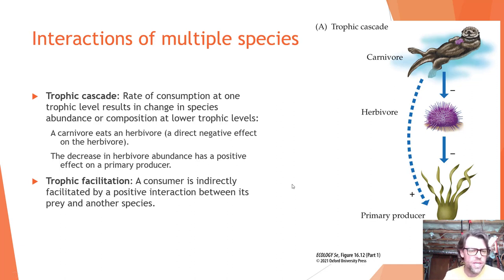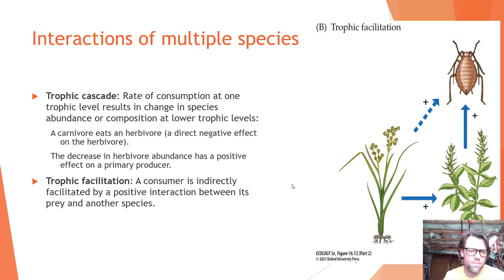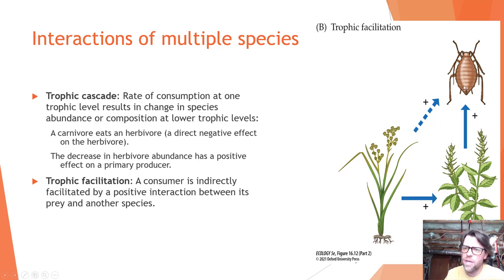Trophic facilitation is another example of indirect interaction, where a consumer is indirectly facilitated by a positive interaction between its prey and other species. For example, two plant species have a positive effect on one another, and also a positive effect on an aphid. Because of this plant-plant interaction, the first plant species has a facilitated positive effect on the aphid as well.